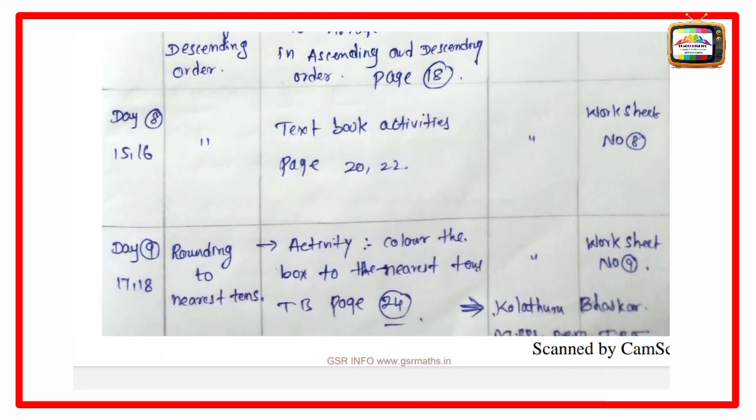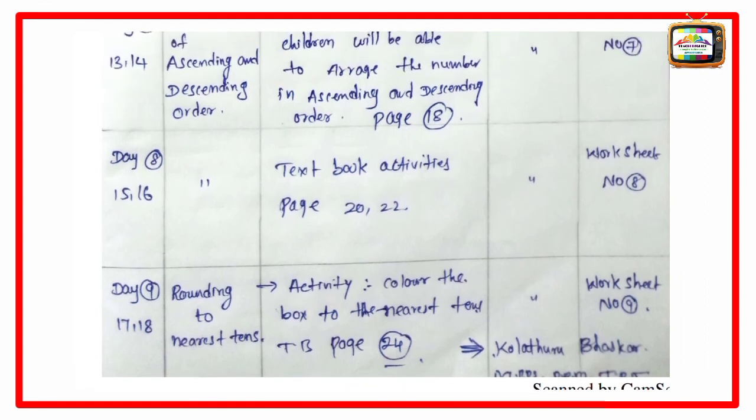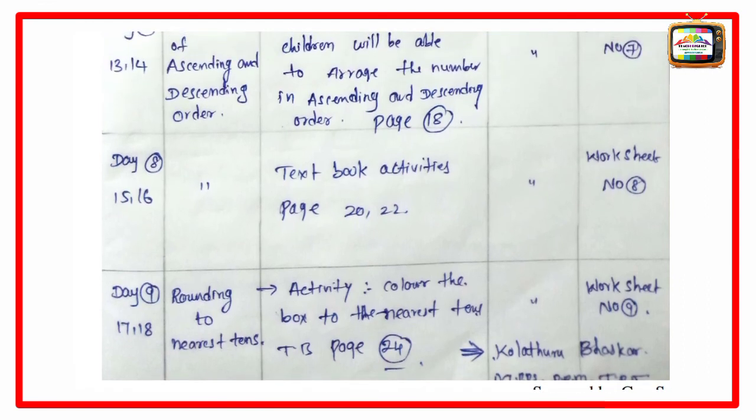Day 9, periods 17-18, rounding to nearest tens. Activity: color the box to the nearest tens. Textbook page number 24. This is the group activity, and worksheet number 9, then individual work.